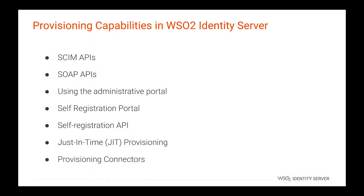These are the provisioning capabilities in WSO2 Identity Server: SCIM APIs, SOAP APIs, using the administrative portal, self-registration portal, self-registration API, just-in-time provisioning, and provisioning connectors.